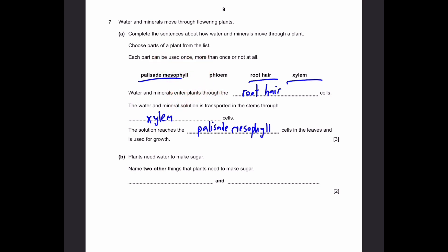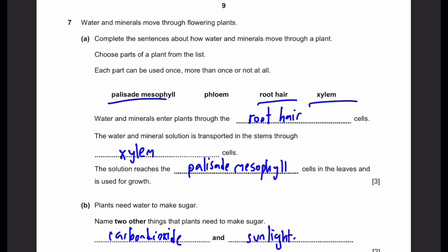Part B. Plants need water to make sugar. Name two other things that plants need to make sugar. This is practically what plants need to make glucose, and that means what do they need for photosynthesis. They need carbon dioxide and sunlight. That's the answer.